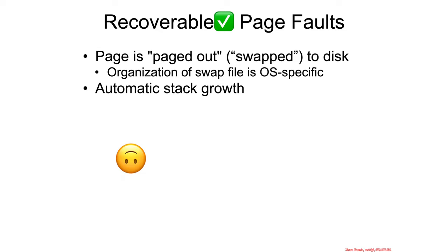There's also automatic stack growth. This could be as you're continuing to push things onto the stack and as it grows towards lower and lower addresses, eventually you're going to cross some page boundary — you're going to push information into the top bytes of one lower page. When that happens, the page fault handler should just go ahead and allocate some new physical address range for that particular linear address that now corresponds to the bottom of the stack, and it should just let the system continue.